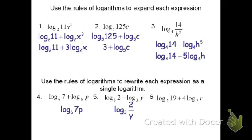For the last one, we've got log base 2 of 9 plus, which means we're going to have a product. But I've got 4 log base 2 of r. This means I can rewrite it as log base 2 of 9 times r to the fourth. That 4 log base 2 of r can be written as log base 2 of r to the fourth, and then we take that sum and rewrite it as the log of a product.